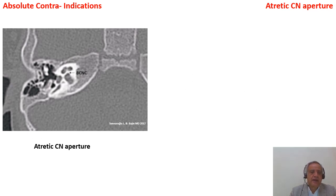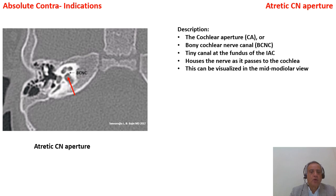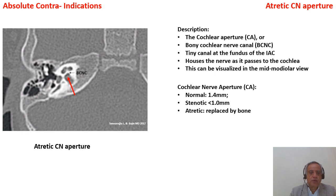The third absolute contraindication is the atletic cochlear nerve aperture. The bony cochlear nerve canal is closed by a bony plate, so the cochlear aperture is atletic, making the cochlea trapped — it does not receive any cochlear stimulation. The best view is the axial mid-modular view. Normal values: cochlear aperture should be 1.4 mm; less than 1 mm is stenotic; less than 0.6 mm is severely stenotic; replaced by bone is called atletic cochlear nerve aperture.